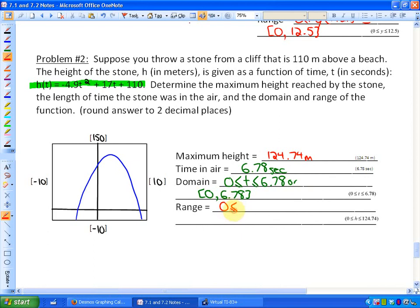And the range is between zero, which is the ground, and the maximum height, which is 124.74. Or in set notation, between zero and 124.74. Okay? And that is the end of this particular lesson.